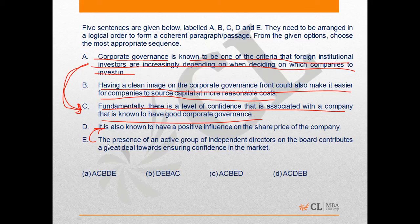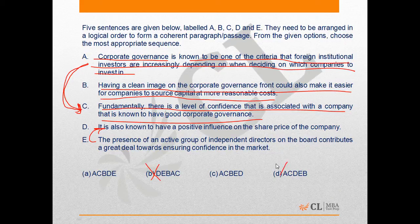Option E explains the reason behind the advantage mentioned in option D: the presence of an active group of independent directors on the board contributes a great deal towards ensuring confidence in the market. So the sequence is A followed by C, then B, then D and E. Since A and C are a mandatory pair, we could have quickly eliminated options B and D as starting points, leaving us with the correct sequence A-C-B-D-E, given in option A.